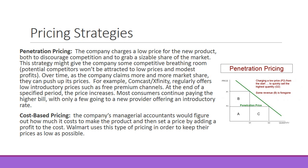With cost-based pricing, the company's managerial accountants figure out how much it costs to make a product and then set a price by adding a profit to the cost. Walmart uses this type of pricing to keep prices as low as possible. For example, they buy 10,000 Spongebob t-shirts from a factory in China. After paying for the product, transportation, and tagging, it might cost $4, and they sell the t-shirt for $6 because they want to make $2 on every product they sell.